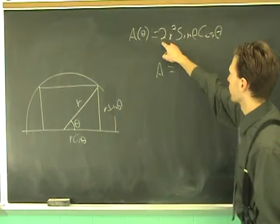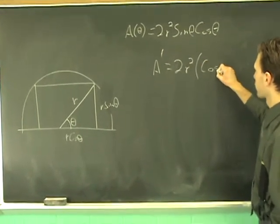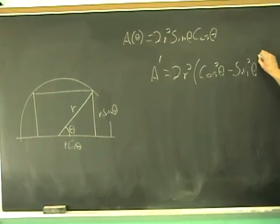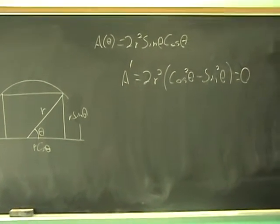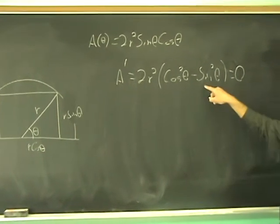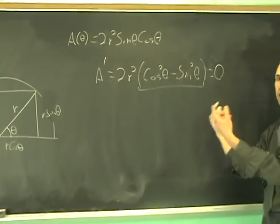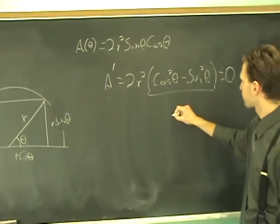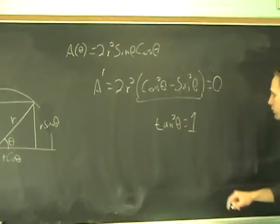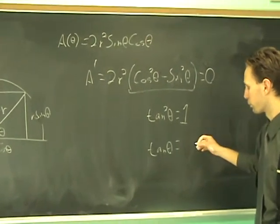A prime equals 2R squared constant. That pulls out, times F prime G, cosine squared theta, plus G prime F. So, that's minus sine squared theta, equals 0. How are we going to solve this? It looks intimidating. There's really no big deal. What I'm going to do is set this part equal to 0, bring the sine squared over, and divide by cosine squared. That will give you tan squared theta equals 1. So, that means that tan theta equals plus or minus 1.